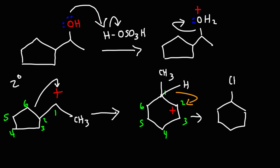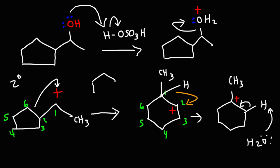After the hydride shift, the plus charge is now on a tertiary carbocation, which means we could form a double bond here, here, or here. Putting the double bond in either of the latter two positions doesn't matter because of the symmetry. So the base is going to abstract a proton, form a pi bond, and the final major product of this reaction is a cyclohexane ring with a double bond and a methyl substituent.